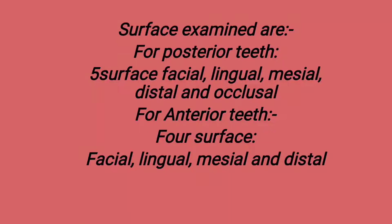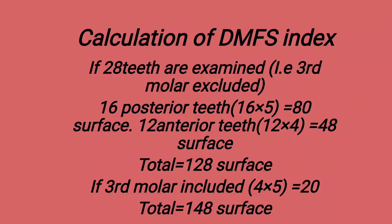The surfaces examined in DMFS: for posterior teeth, five surfaces are examined — facial, lingual, mesial, distal, and occlusal. For anterior teeth, four surfaces are examined — facial, lingual, mesial, and distal. For calculation when 28 teeth are examined (third molars excluded): 16 posterior teeth × 5 = 80 surfaces; 12 anterior teeth × 4 = 48 surfaces; total 128 surfaces. When third molars are included, 4 × 5 = 20 additional surfaces, giving a total of 148 surfaces.